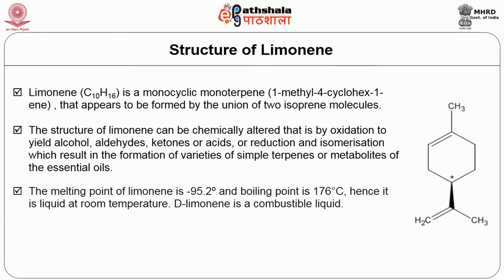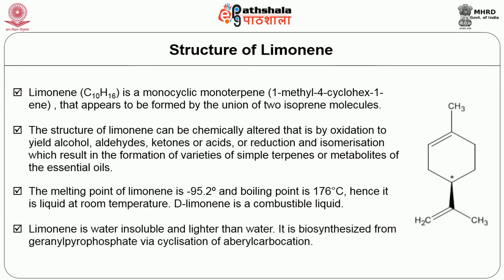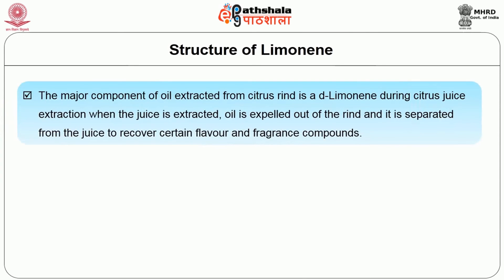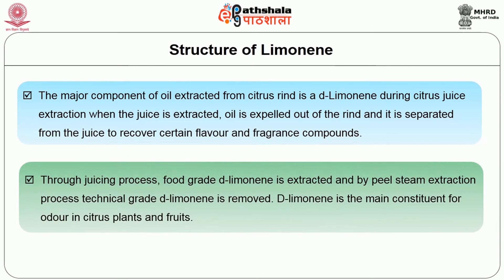The melting point of limonene is -95.2°C and boiling point is 176°C, hence it is liquid at room temperature. D-limonene is a combustible liquid. Limonene is water-insoluble and lighter than water. It is biosynthesized from geranyl pyrophosphate via cyclization of the neryl carbocation. The major component of oil extracted from citrus rind is D-limonene. During citrus juice extraction, oil is expelled from the rind and separated from the juice; food-grade D-limonene is extracted by peel steam extraction, while technical-grade D-limonene is separately removed.